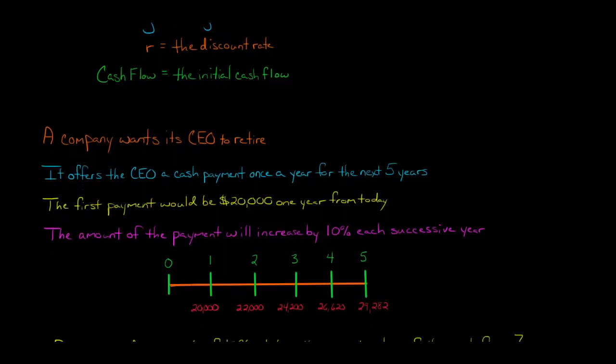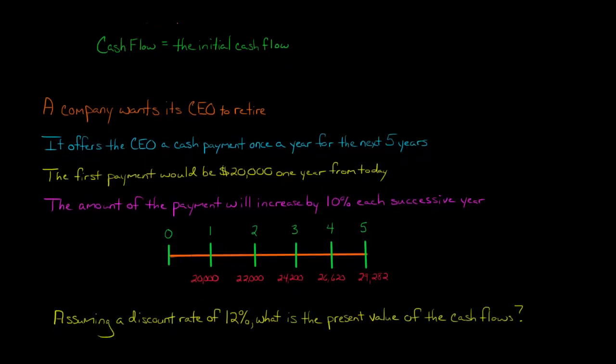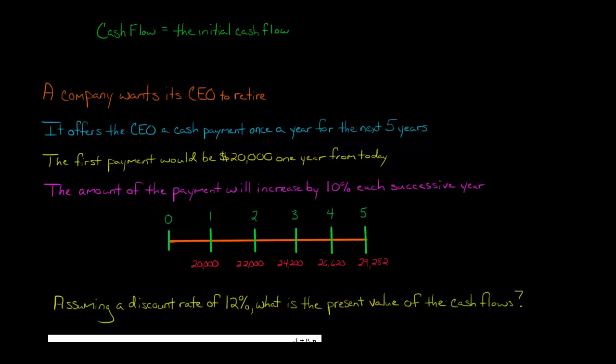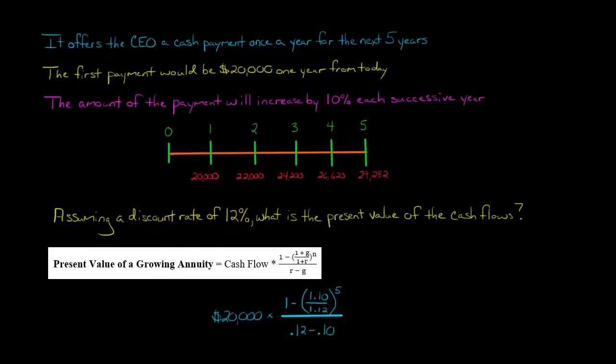That is the stream of cash flows that this CEO is going to receive. And you could actually go and do the present value of each single cash flow and then add them all up. But we're just going to apply the formula for the growing annuity. So let's assume that the discount rate is 12%. And then the question is, what is the present value of this series of cash flows?